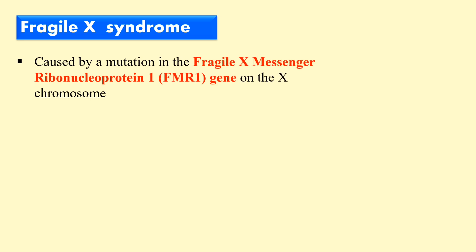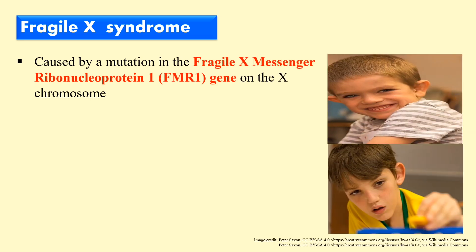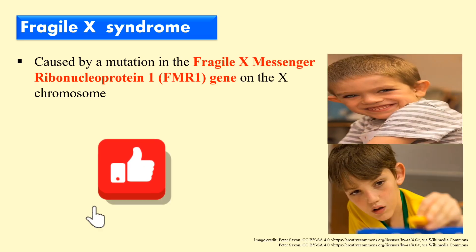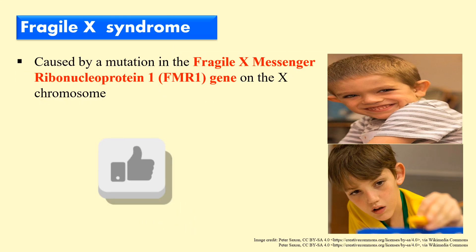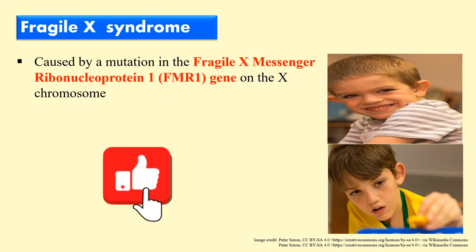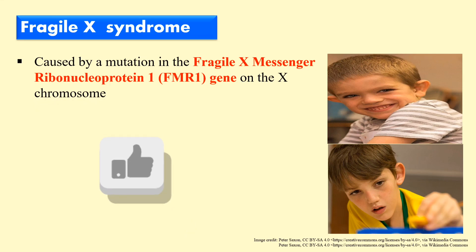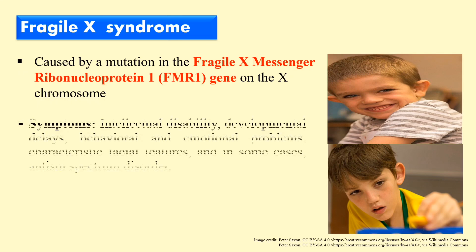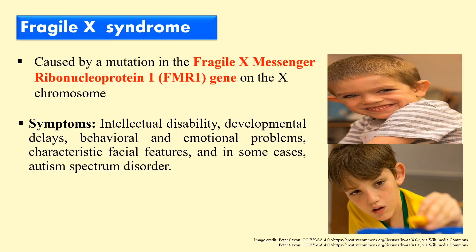Next is Fragile X syndrome. This is caused by a mutation in a protein called Fragile X messenger ribonucleoprotein (FMR1), whose gene is located on the X chromosome. When there is a mutation in the gene of this Fragile X messenger ribonucleoprotein, the syndrome is known as Fragile X syndrome. Symptoms include intellectual disabilities, poor developmental behavior, emotional problems, characteristic facial features, and autism spectrum disorder.